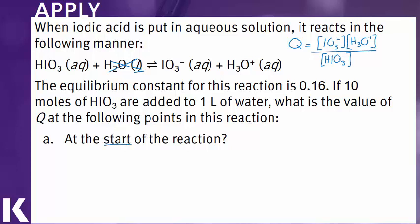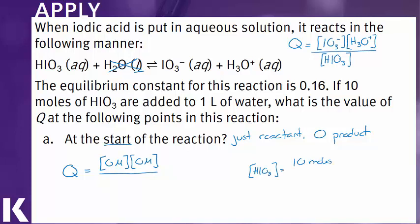Part A is asking for the start of the reaction. This means that we are starting with just reactants. At this point, we have zero product. We can calculate this out. We would say Q would be equal to our concentration of products, which here would be zero molar for both the IO3- and the H3O+. And then we would need to calculate the starting amount of HIO3. To do this, we know that we have 10 moles dissolved in one liter. So this would give us a 10 molar concentration. We have zero in our numerator, so zero times zero over 10 would be zero. So at the start of this reaction, our reaction quotient is zero, which makes sense because we don't have any product yet.